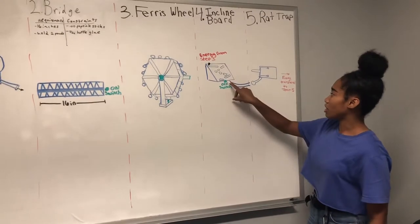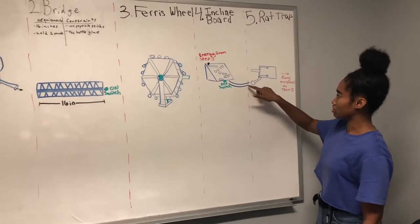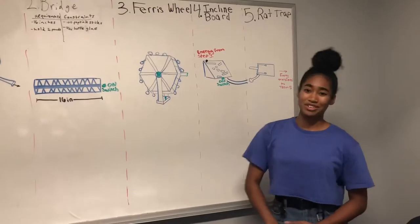From there, the steel ball is going to roll down this track. It will activate Step 5, the rat trap.